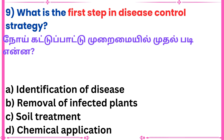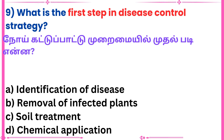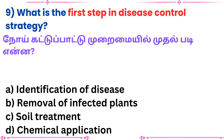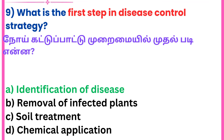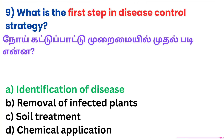Ninth question: What is the first step in a disease control strategy? Answer: Identification of disease.